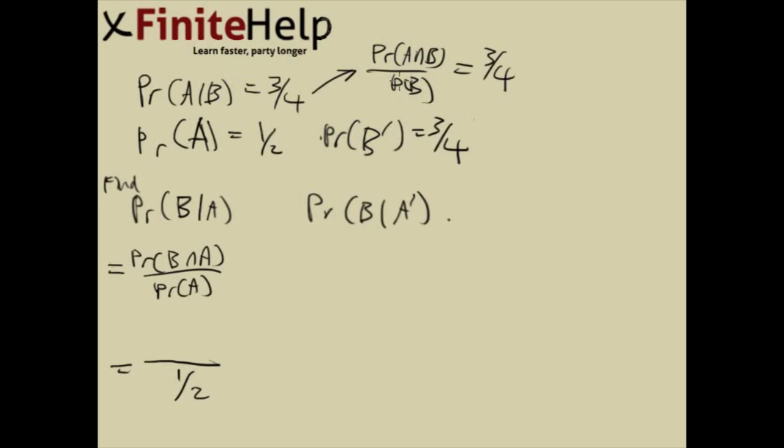And here we do actually have B in sort of a hidden form. We know B' is three-fourths. And we know any set plus its complement is always going to be one. This implies that probability of B is one-fourths.